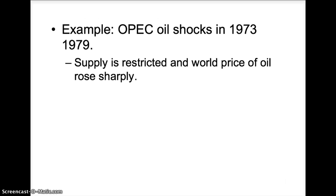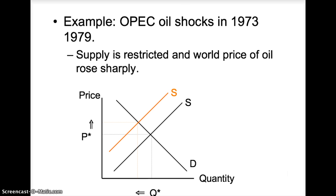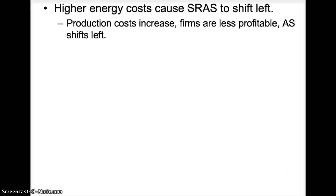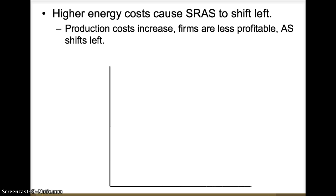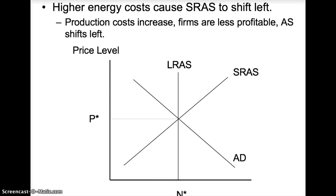An example of an adverse supply shock is the OPEC oil crisis of 1973–1979. OPEC restricted the supply of oil and the world price of oil rose sharply. On a simple supply and demand diagram, as the supply curve decreases, the result is higher prices and a lower quantity available. Higher energy costs shift the short-run aggregate supply curve left, since oil is an input into the production of many goods and services, mostly through transportation costs. As production costs increase, firms are less profitable and the SRAS shifts left, resulting in higher prices and lower output — inflation and recession simultaneously.